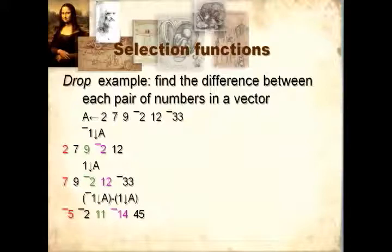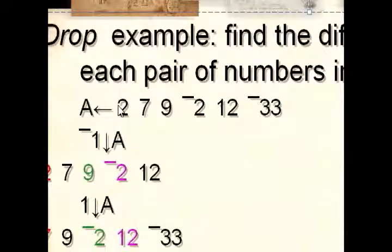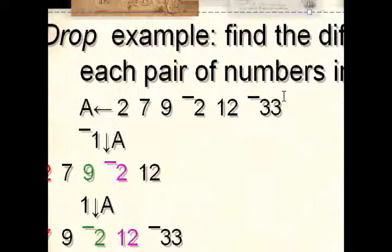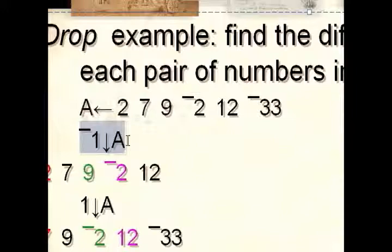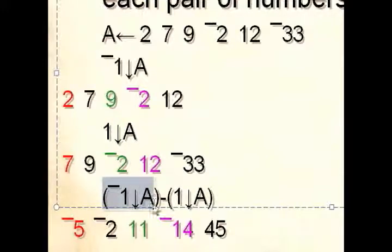Here's an example of using Drop. There are many ways to find the difference between pairs of numbers in a list, but here is one way using Drop. Given any vector, what we want to do is take each number and subtract it from the next. So basically we want to take these five numbers and subtract them from these five numbers. These five numbers are a minus-one Drop of the array, and these five numbers are the one Drop of the array. So if we do minus-one Drop of the array minus the one Drop of the array, we end up with the difference between each pair.